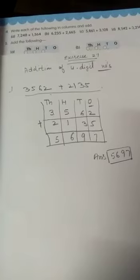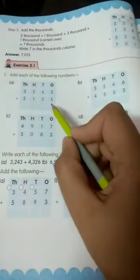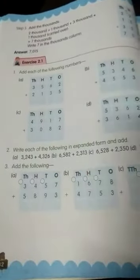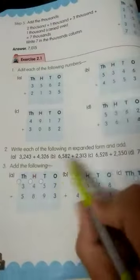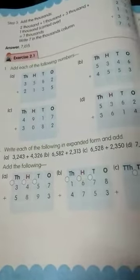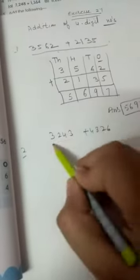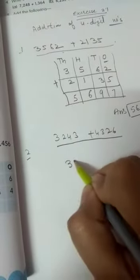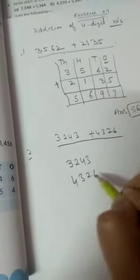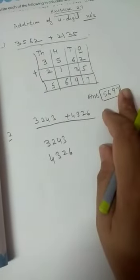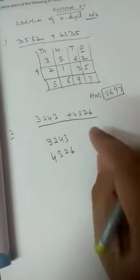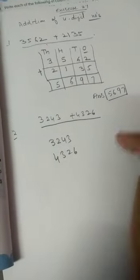In this way you have to do all the questions. The first question is already arranged in columns. Right? So you have to do this question in your notebook. Look at your second question. There is written. Write each of the following in expanded form and then add. 3243 plus 4326. This is your question. What you have to do? You have to write down its expanded form and then add. Whether you will do it directly or whether you will do it by expanded form. Answer will be same.